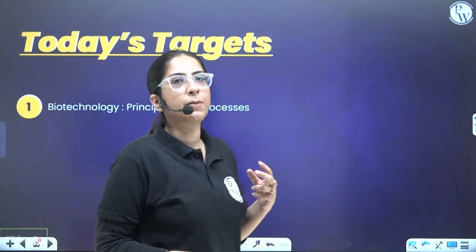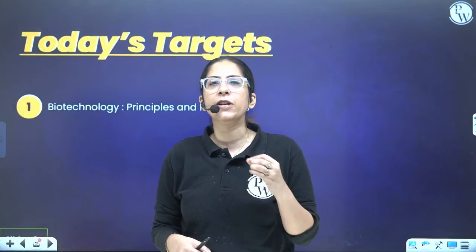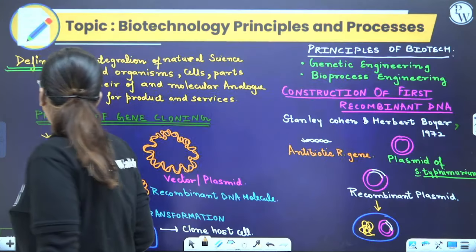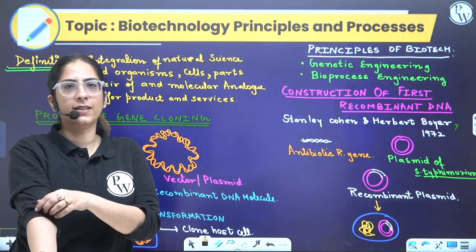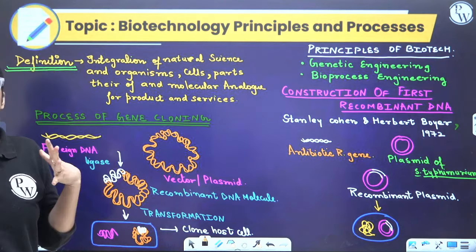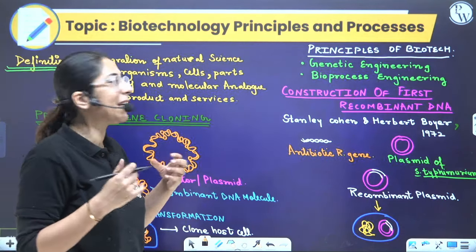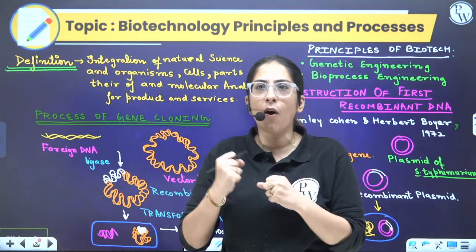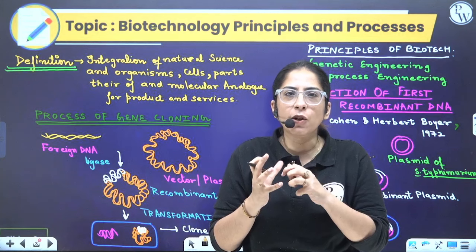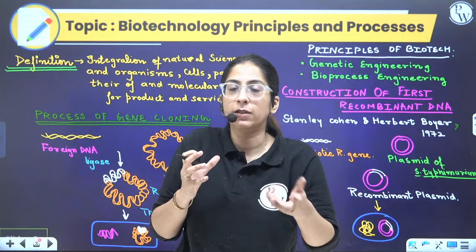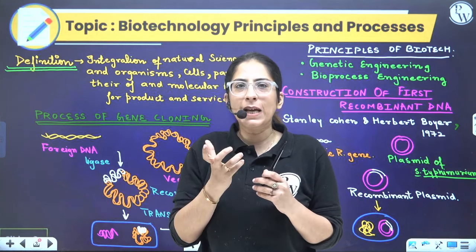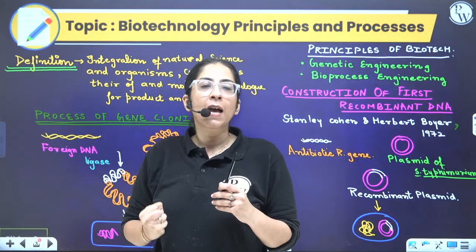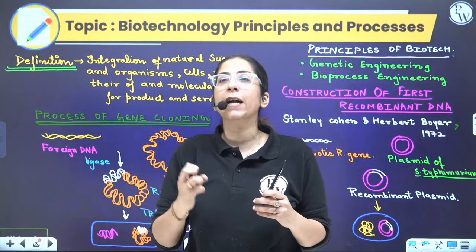In Biotechnology there are two chapters: Biotechnology Principles and Processes, and Biotechnology Applications. Today I am only dealing with Biotechnology Principles and Processes. What is Biotechnology? Biotechnology means integration of natural science — we are integrating natural science parts and using molecular analogues to get a particular product. In simple language, we are modifying the genotype of an organism and using that organism as a machine so that a desired product can be produced.